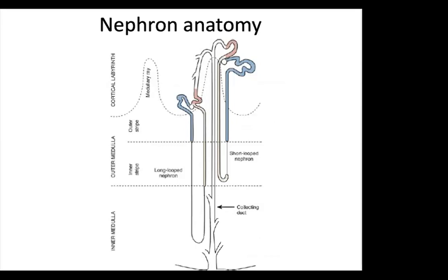Before understanding renal function, the basic unit of the kidney—the nephron—must be carefully studied. Reabsorption describes movement from the tubular lumen back to blood, while secretion indicates movement from blood into the tubular lumen. Starting at the proximal convoluted tubule, approximately 60% of glomerular filtrate is reabsorbed. Under normal circumstances, the PCT reabsorbs 65% of filtered sodium, potassium, and calcium; 80% of filtered phosphate, water, and bicarbonate; and 100% of glucose and amino acids.